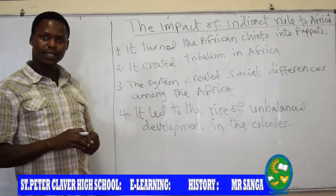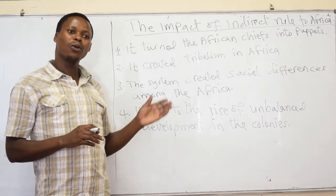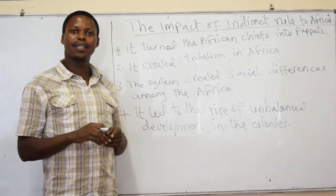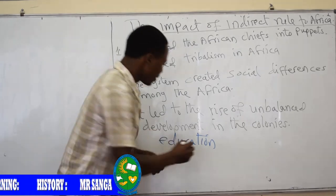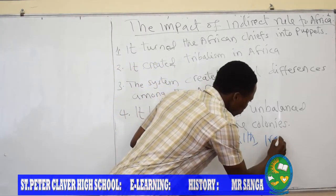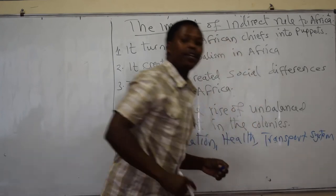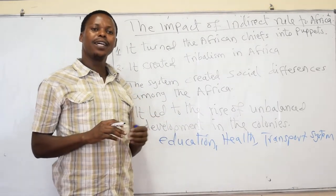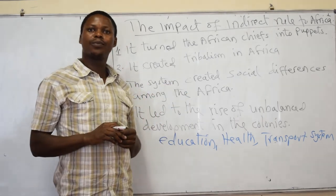Another impact — the last impact — was that it led to the rise of unbalanced development in the colonies. The areas where African chiefs lived were more developed and favoured than other areas in terms of education, health, and transportation. This unbalanced development led to conflict between the African chiefs and their subjects after the end of colonialism in Africa.